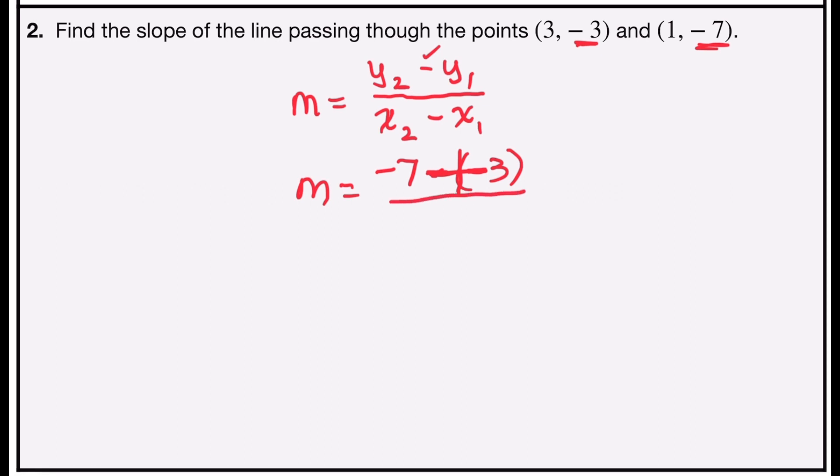In the denominator, or the second part of the ratio, I have the second x-coordinate 1, minus, that's in the formula, the first x-coordinate is 3.